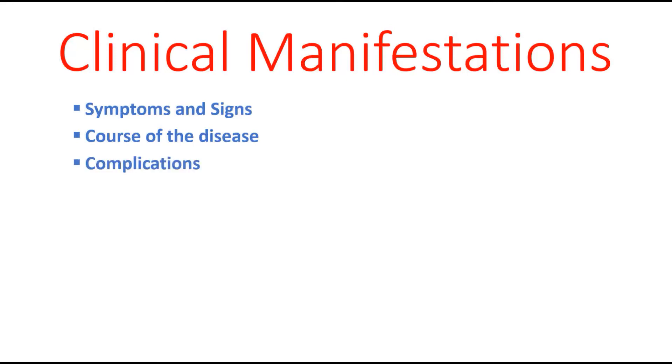You also have to know the course of the disease. Some diseases take a short course — like pneumonia, which takes two to three weeks, maximum one month. Some diseases take a long course with remissions and relapses, like rheumatoid arthritis or ulcerative colitis. Some diseases have complications you must know.